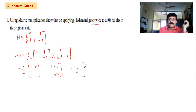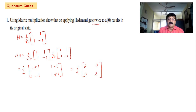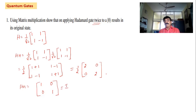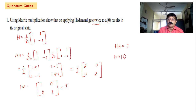The first term becomes 2, the second term becomes 0 because 1 - 1 = 0. Next is 0. Next is 2. Now H×H equals 1/2 × [2, 0; 0, 2]. Taking the 2 inside this becomes [1, 0; 0, 1]. Look at this — what is this? It is the identity matrix. So H×H = I.